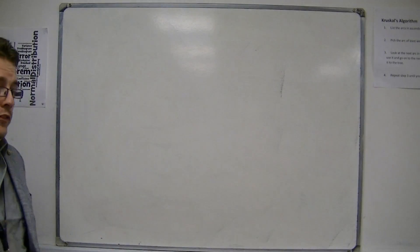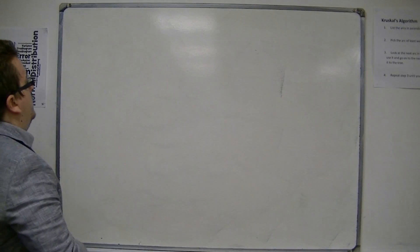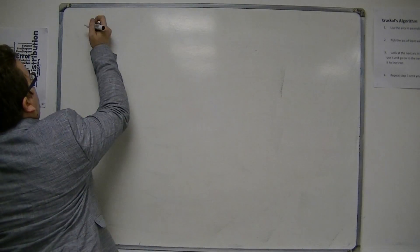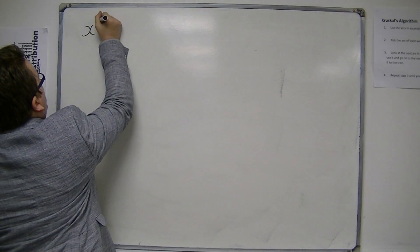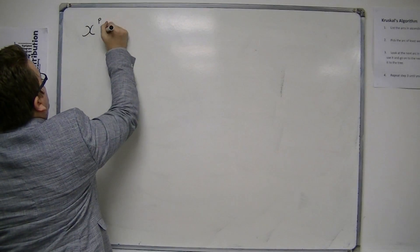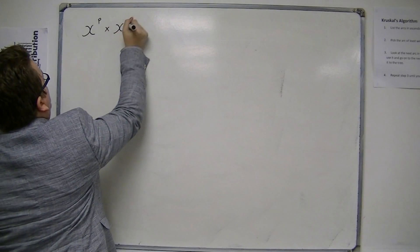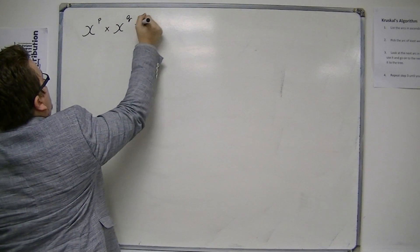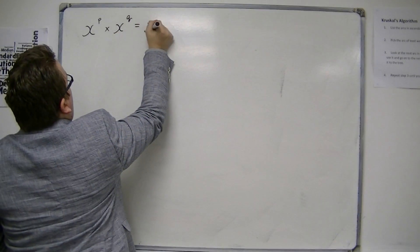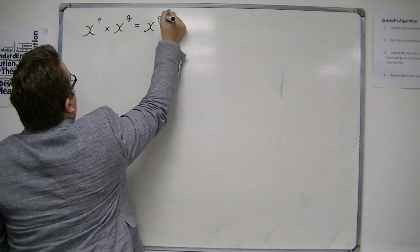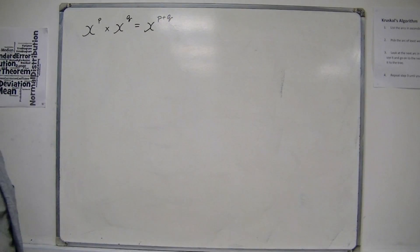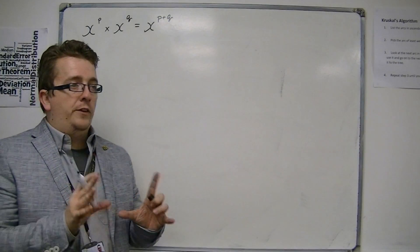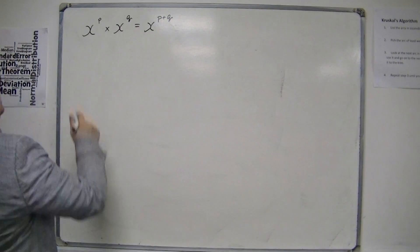So the first law is that if you have x to the p times x to the q, then this is x to the p plus q. So that's our first thing to remember.